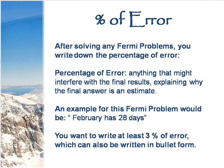Percentage of error. After solving any Fermi problems, you write down the percentage of error. Percentage of error is anything that might interfere with the final results, explaining why the final answer is an estimate. An example for this Fermi problem would be that February has 28 days. You want to write down at least three percentages of error, which can also be written in bullet form.